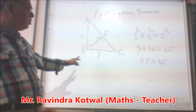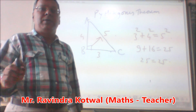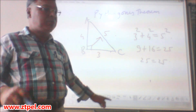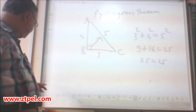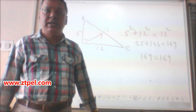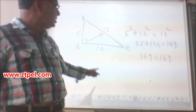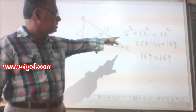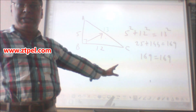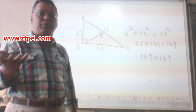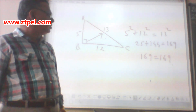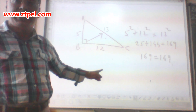The statement is: the sum of the squares of two sides is equal to the square of the hypotenuse. Consider another triangle with sides 5, 12, and 13. If we take the squares and add them, then the left hand side and right hand side are exactly equal. So the sum of the squares of two adjacent sides is equal to the square of the hypotenuse — this is called Pythagoras theorem.